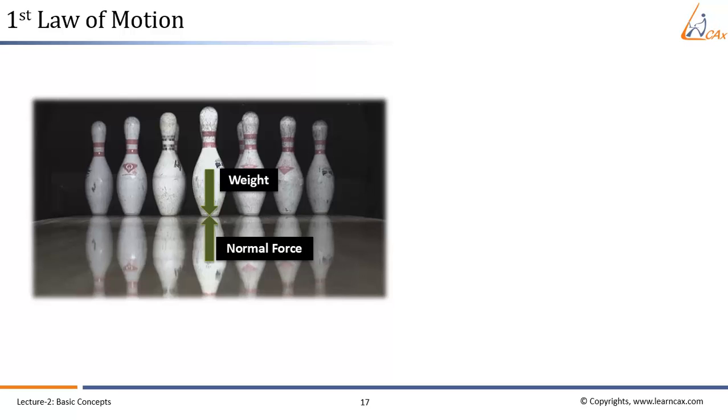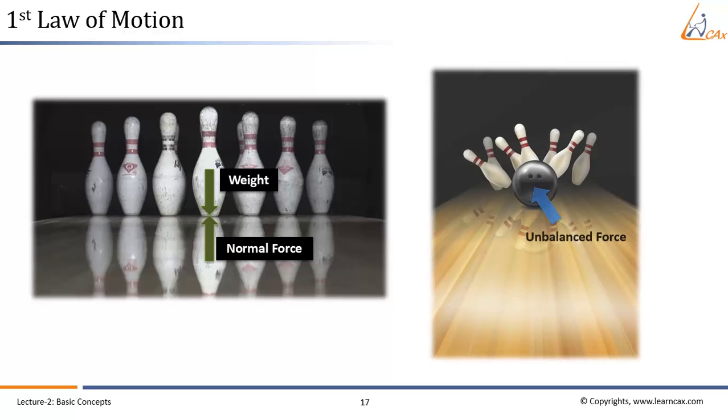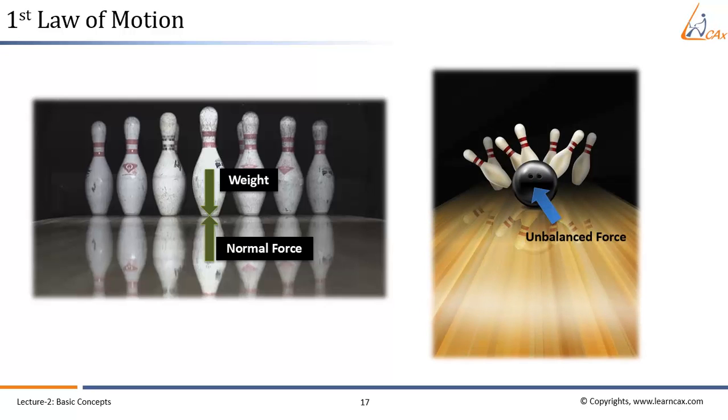But when the ball hits the pins, it interacts with the pins. As a result of this interaction, a new force is generated. This new force creates an imbalance in the system and causes the pins to change its state of motion, or in other words, the pin changes its velocity.